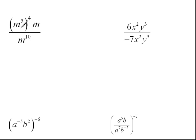Here in this problem, we have m to the 5th raised to the 4th times m all over m to the 10th power. The first thing that I notice here is that we have a power to a power, which tells us that we're supposed to multiply that. So that truly is m to the 5 times 4, which is 20, times m all over m to the 10th power.